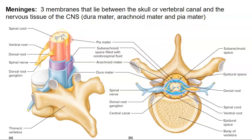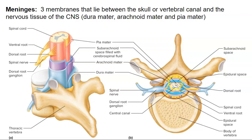Here's the spinal cord and here are the three coverings. The most superficial one is the dura mater, then the arachnoid mater, then the pia mater. We also see that in this cross-sectional image as well. Here's the dura mater in sort of light blue, and then right deep to that is the arachnoid mater, and then covering the spinal cord itself is the pia mater.